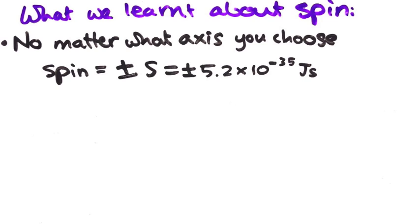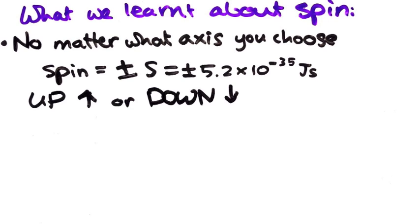We'll give these two possibilities some convenient names, up and down. So you can, for example, say that an electron is spin down in the y-direction.